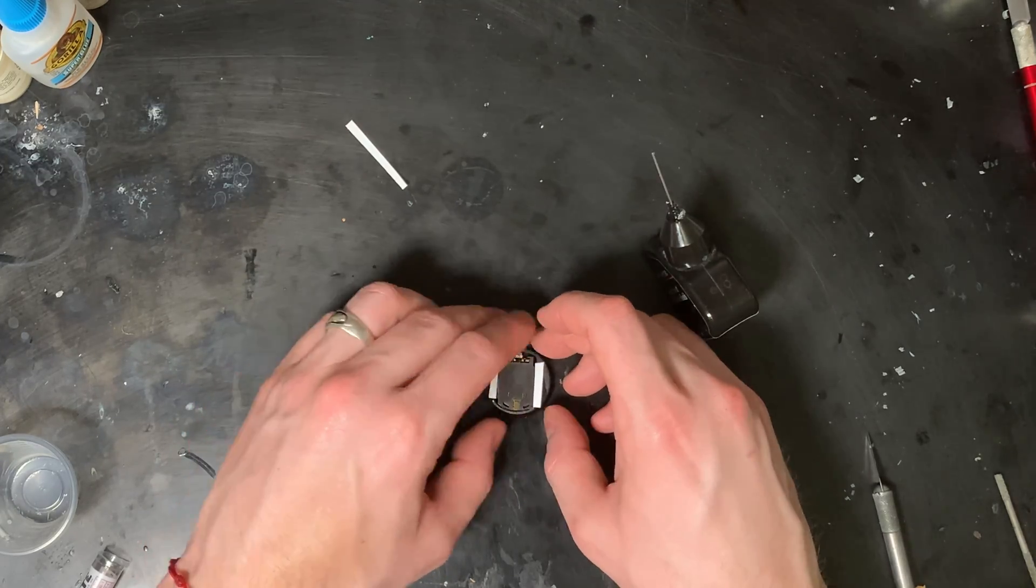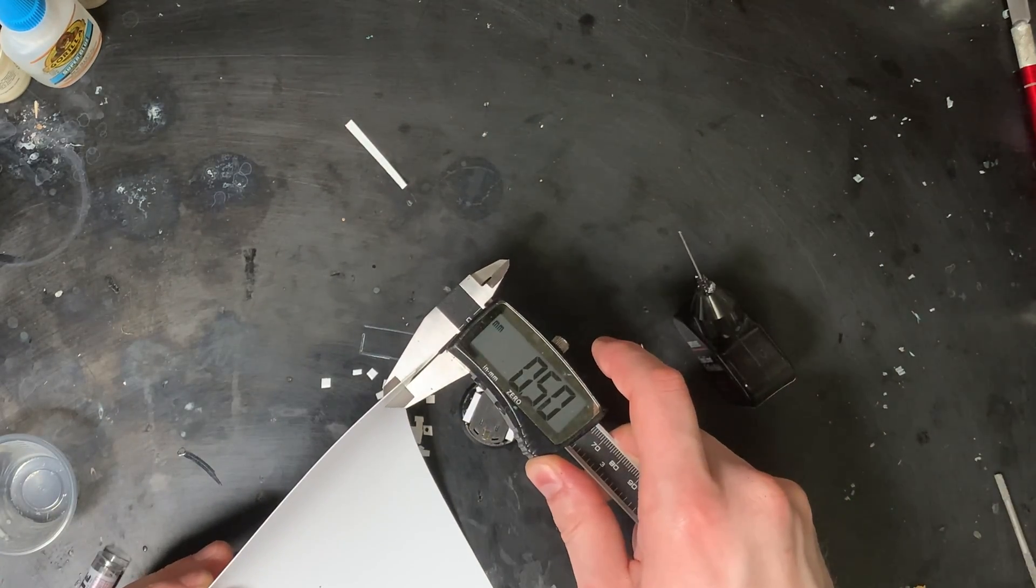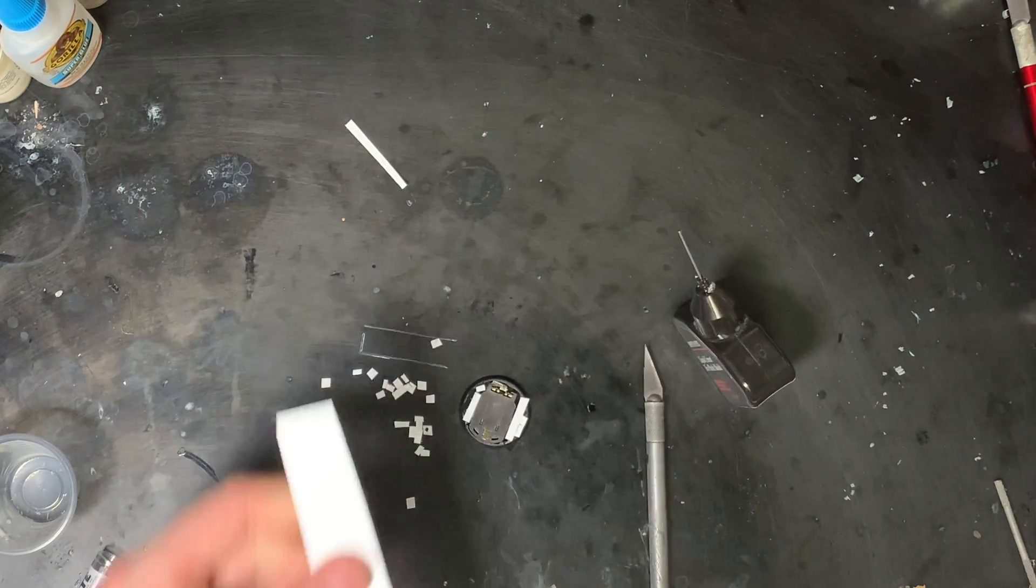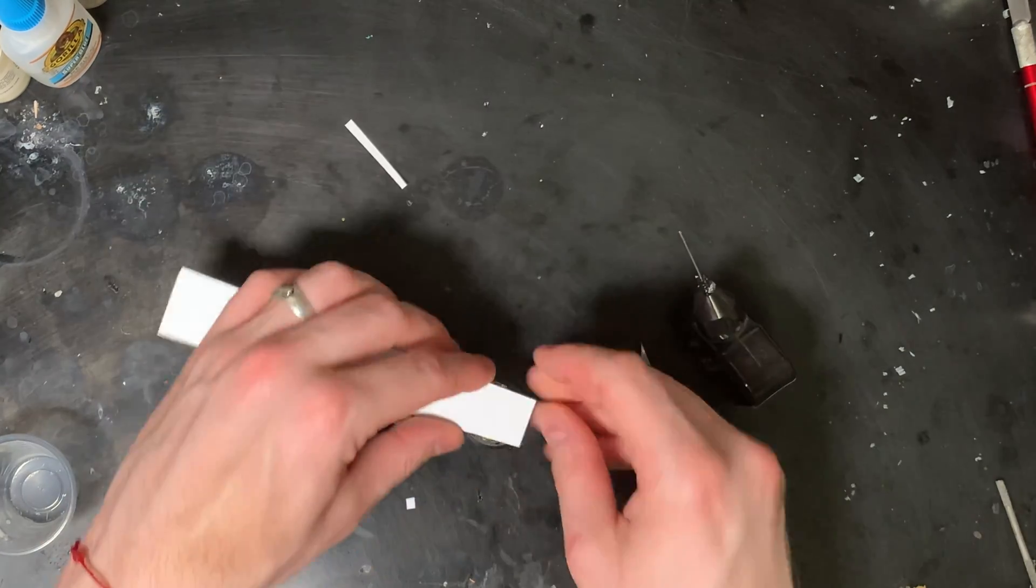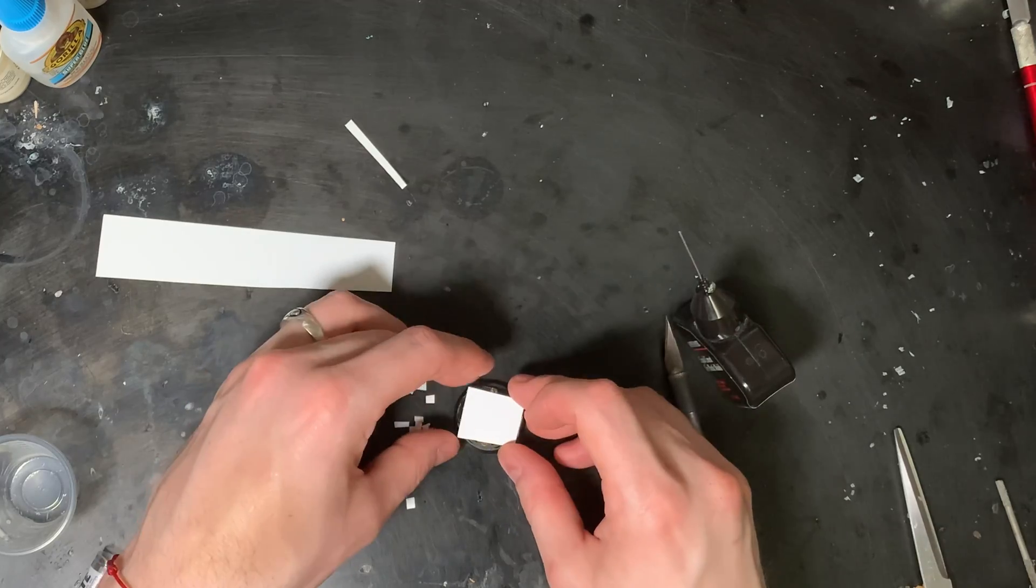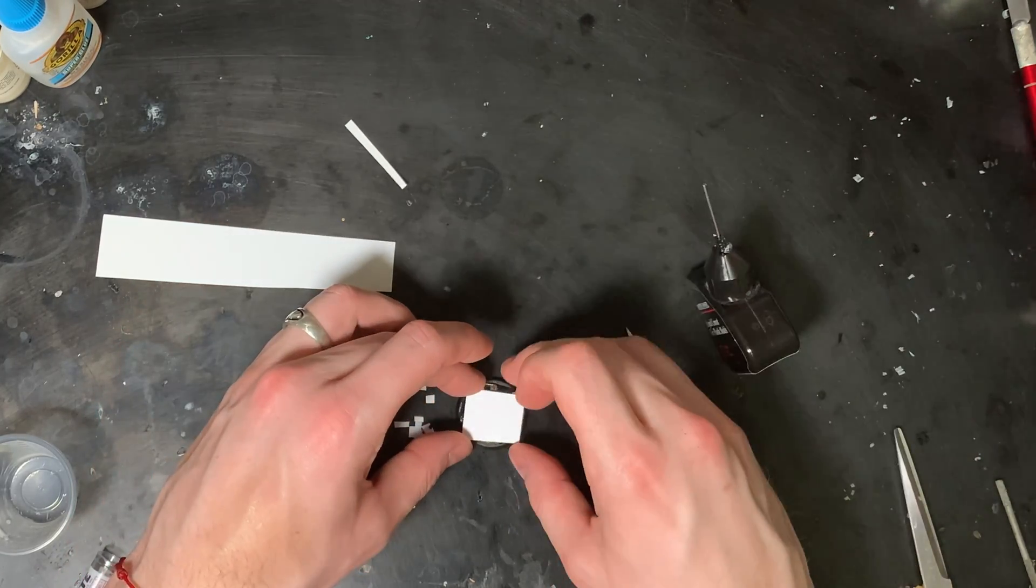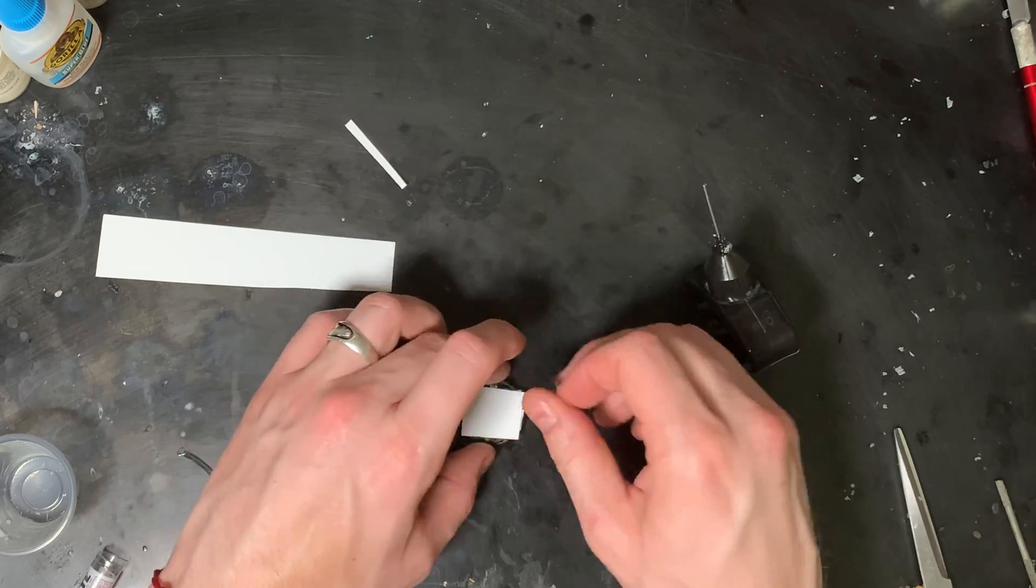Once I'm satisfied with all the shims being glued into place I'm going to come in with a top plate. This is half millimeter plastic card. We're going to cut this down to size and I'm not going to worry too much about covering the whole base because I'm going to put some texture on here anyway so it'll be hidden. Now that's all in place we're going to go ahead and set this aside and let that dry.